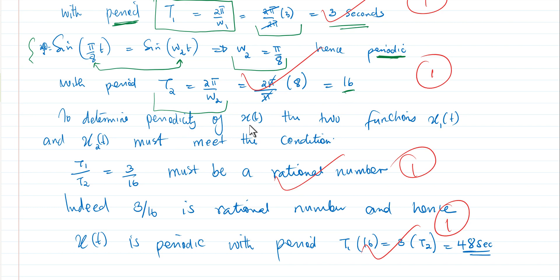Now, to determine the periodicity of x(t), which is a sum of two functions x1 and x2(t), what we need to do is to apply the condition that says the ratio of period 1 and that of period 2 should always give you a rational number. A rational number means that it's a number that can be expressed as a fraction of two whole numbers. If there are two whole numbers, then we say that condition is met.